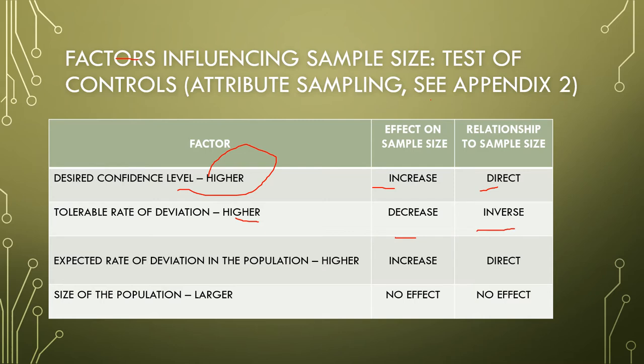For the expected rate of deviation in the population, the higher the expected rate of deviation, the larger the sample size needs to be, because the auditor would want to be in a position to make a reasonable estimate of the actual rate of deviation. Therefore, this is a direct relationship.